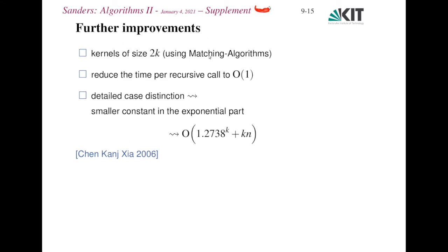Without going into the details, there are further improvements. One can achieve kernels that have size not k squared but 2k by using matching algorithms. One can reduce the time for the recursive calls to constant using the right data structures. Making a more detailed case distinction, one can even show a running time of just 1.273^k plus kn, so the problem dependent part is just a kn term, and then this is independent of the input size with a really quite small base.